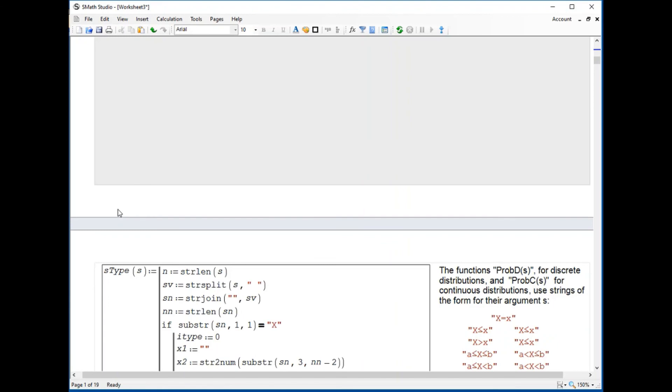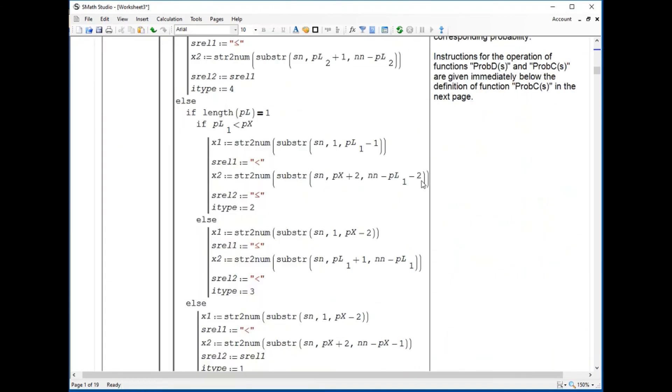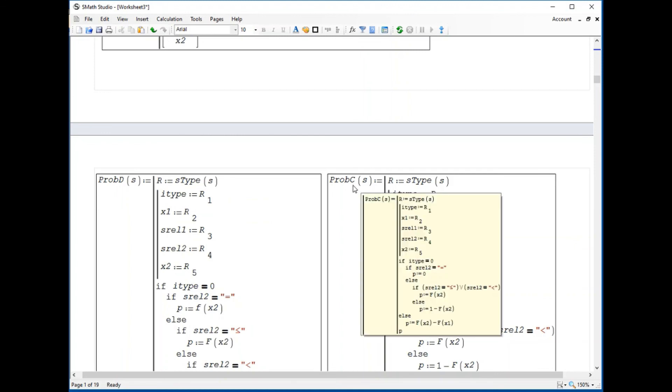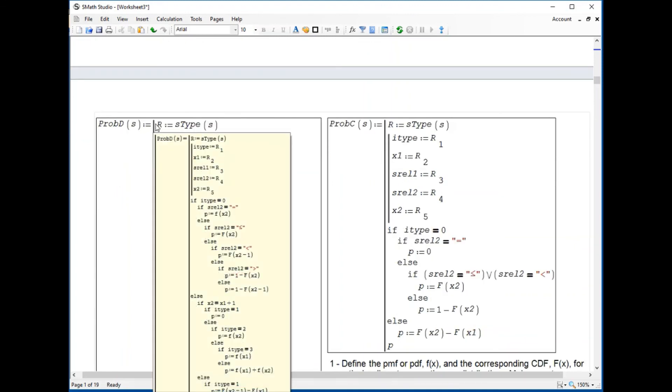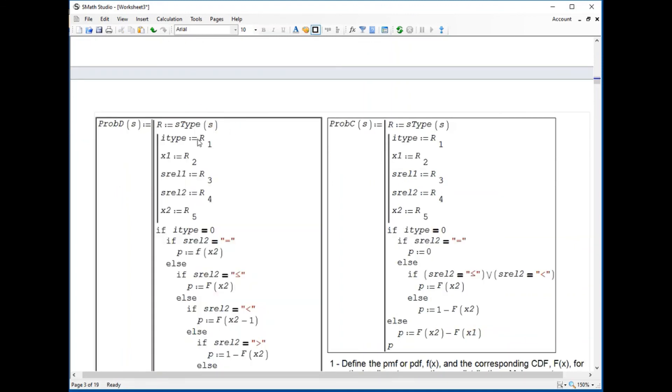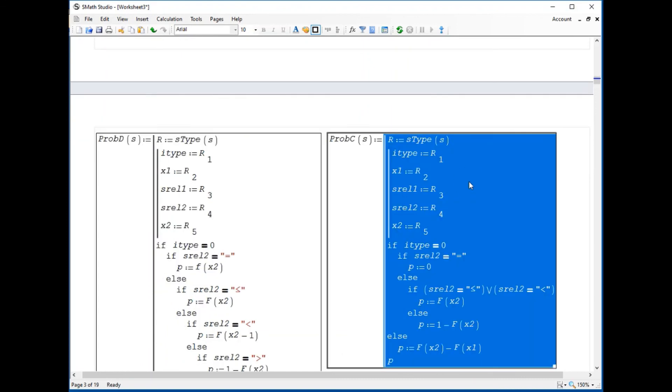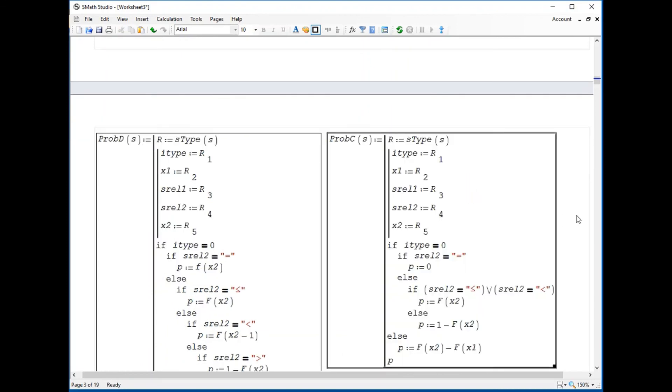And that function will be under functions prob D and prob C for probability calculations. The first function is the function S type, and then the probability D is probability for discrete, probability for continuous, and the first thing I do is calculate S type and then split R into its component and then go calculate the probability for discrete or for continuous in this case. And so that's what I wanted to present for this particular video.